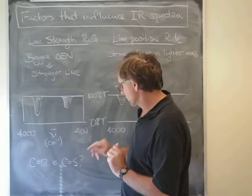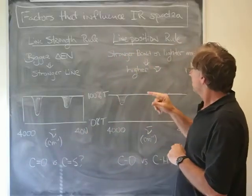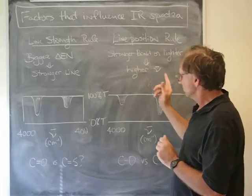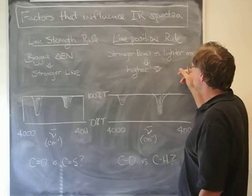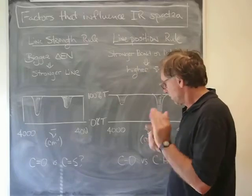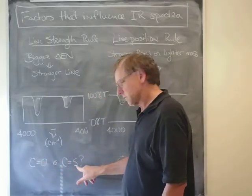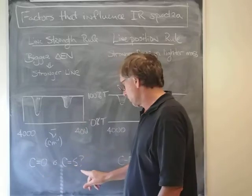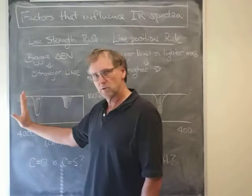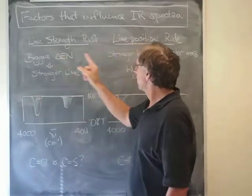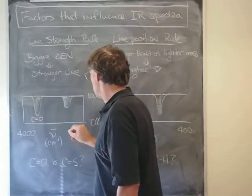We're thinking that belongs there, but let's just check the other rule. The line position rule says that stronger bonds—can't really tell because they're both double bonds—but how about this criterion: a lighter mass produces a higher wave number. The carbons are the same, but we have oxygen here and sulfur here. Oxygen is much lighter than sulfur, so that would argue for this carbon double bond oxygen to be off to the left. Both of these criteria are arguing that this really is the carbon double bond oxygen and that really is the carbon double bond sulfur peak.